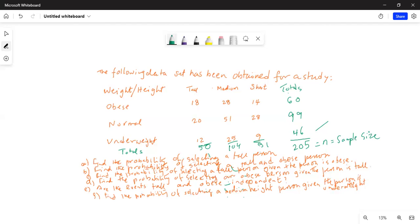So it checks out. The sum of the rows and the sum of the columns are all equal to 205, and this is your n, which is your sample size. First question: find the probability.